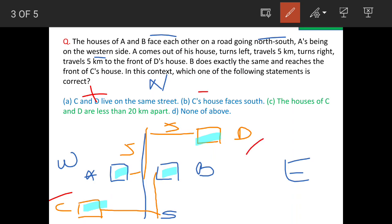C's house is facing south. As per the statement, B is standing in front of C's house, that means his house is facing east. This is also incorrect.